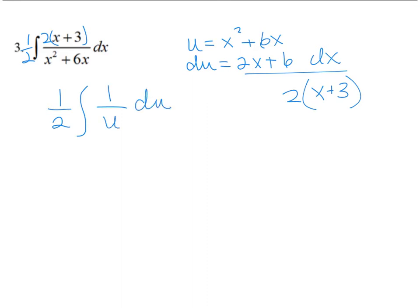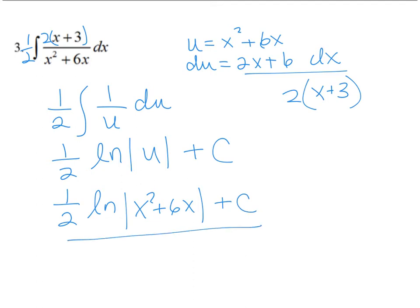So that's just going to be 1 half the natural log of absolute value of u plus c. And so what is u? Well, 1 half natural log of x squared plus 6x plus c. And that's your answer.